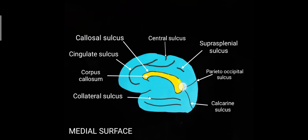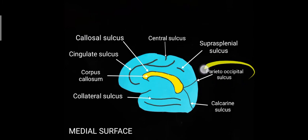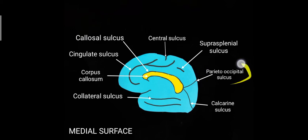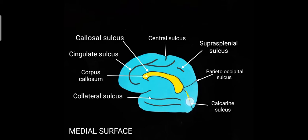Starting from the tail end of the corpus callosum you can see two sulci running away from each other, almost perpendicular to each other. The upper one is the parieto-occipital sulcus, which separates the occipital lobe from the parietal lobe — we saw a part of it on the superolateral surface, but the major part is on the medial surface. The sulcus running downwards from the same point is the calcarine sulcus.